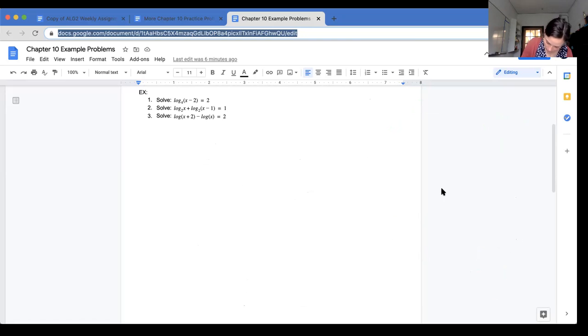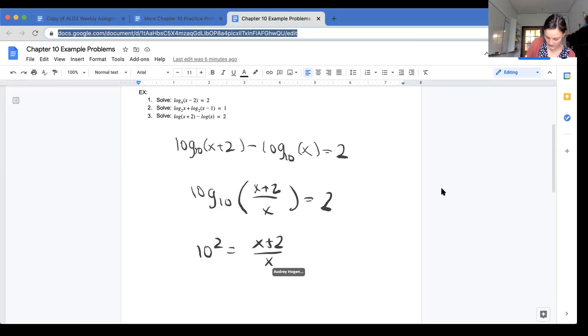And then last up, I have log of x plus 2 minus log of x equals 2. And there's an implied base of 10 there. When we don't have a base written, it is 10. So I'm going to just write that in there so that it's explicit. And then I can use my quotient property, which tells me that when I have subtraction, I can rewrite the logarithmic expression into one expression that is division. So I'm going to have x plus 2 divided by x equals 2. And then again, I can write 10 squared equals x plus 2 over x. 10 squared is 100. So I have 100 equals x plus 2 over x.